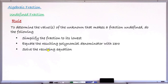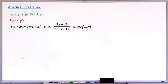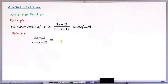Example one: for what value of x is the fraction (3x minus 12) over (x squared minus x minus 12) undefined? To simplify, we factorize the numerator and denominator. The numerator 3x minus 12 factors as 3 times (x minus 4) — since 3x divided by 3 is x, and minus 12 divided by 3 is minus 4.